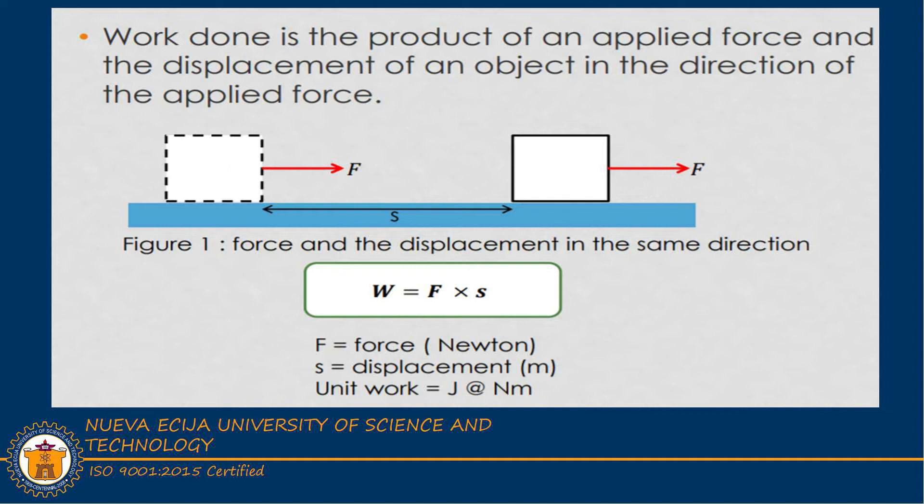From the given example, we can say that work done is the product of an applied force and the displacement of an object in the direction of the applied force. The mathematical equation will be W equals F multiplied by S, where F is the force expressed in Newton, S is the displacement expressed in meter, and joules is the unit for work.